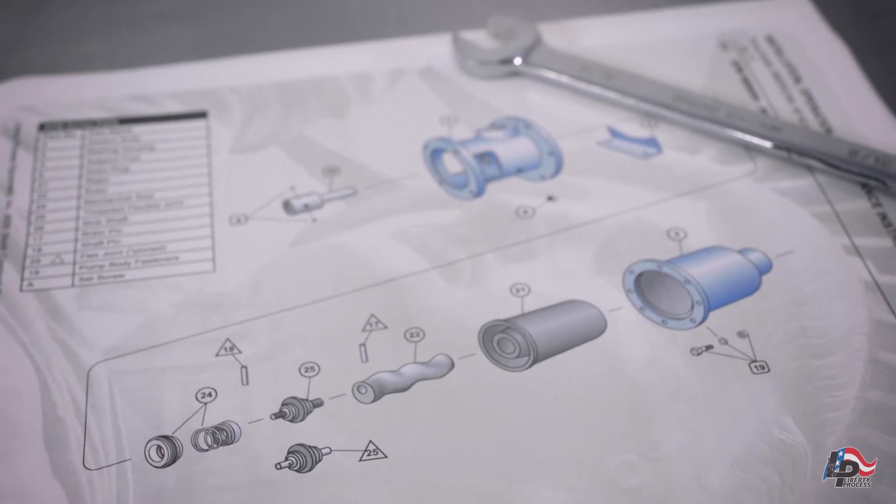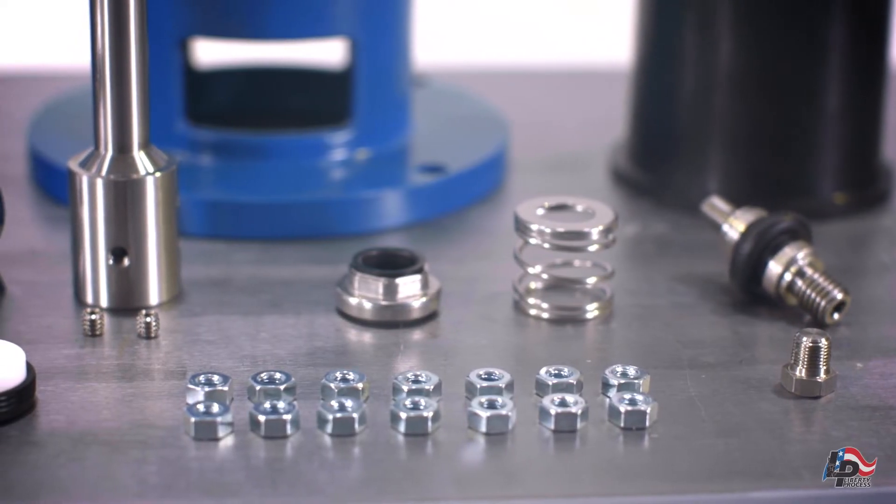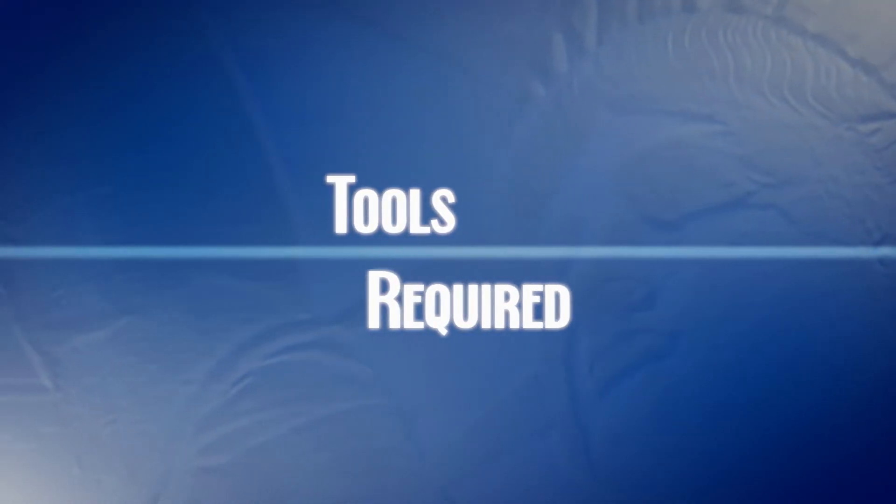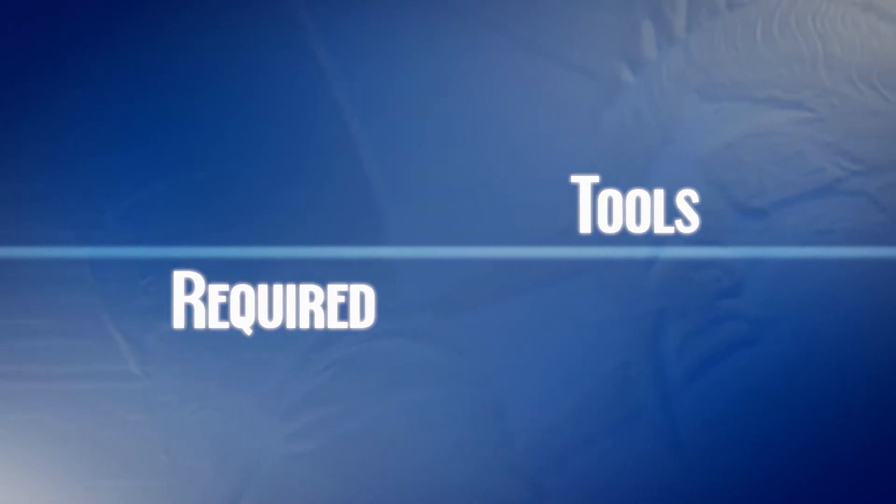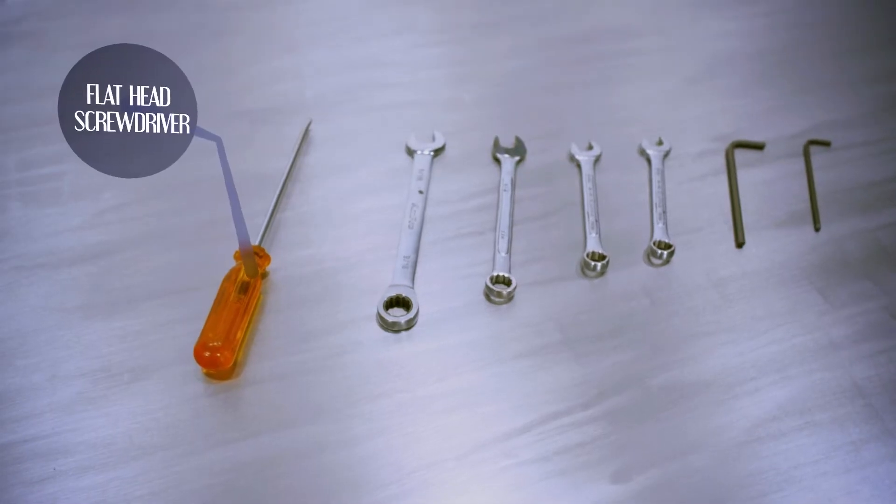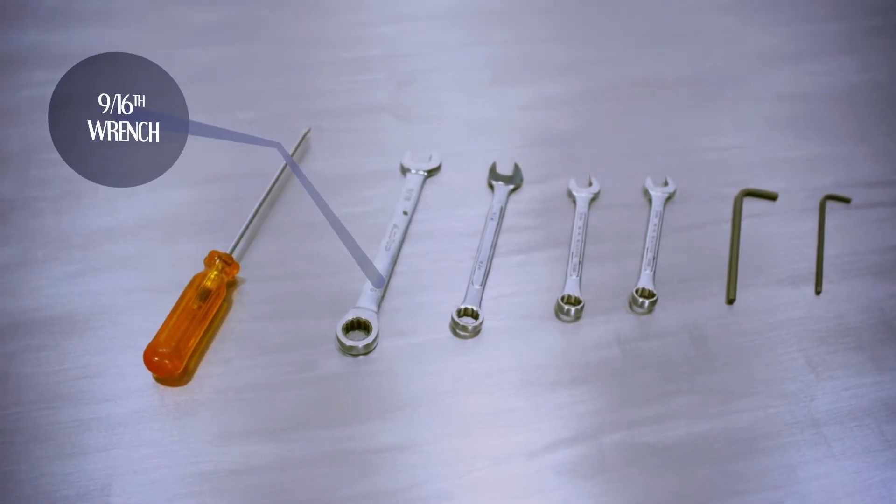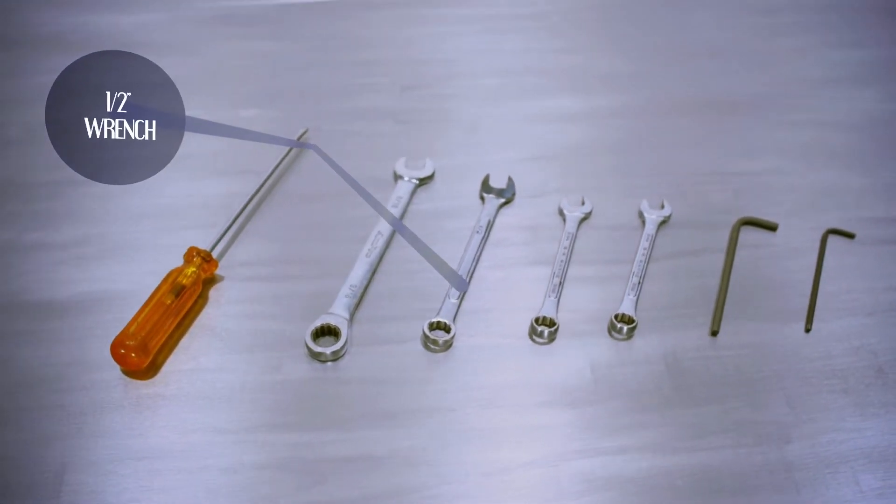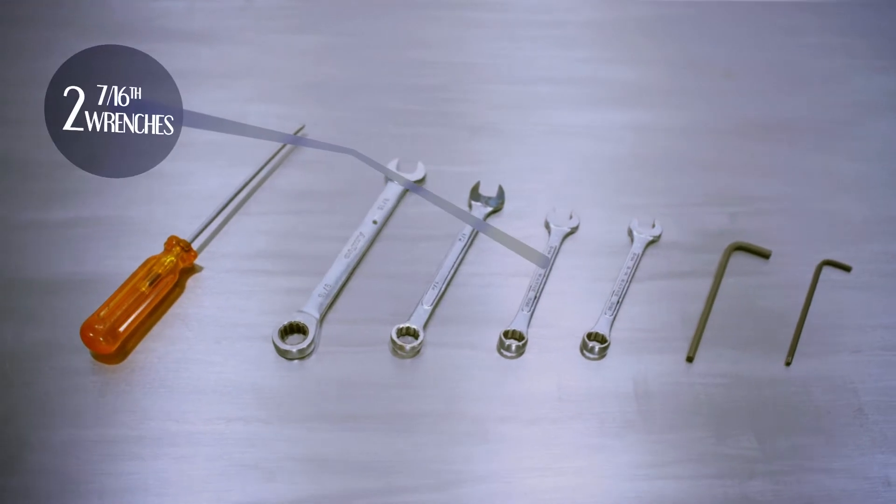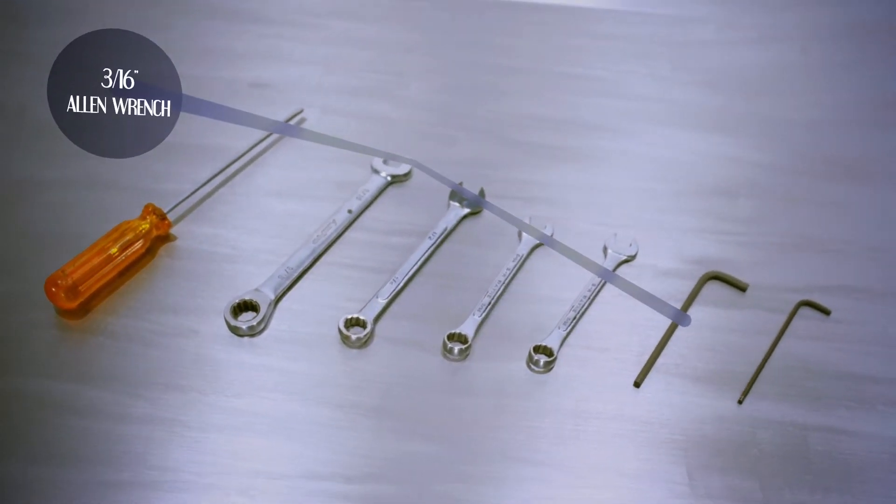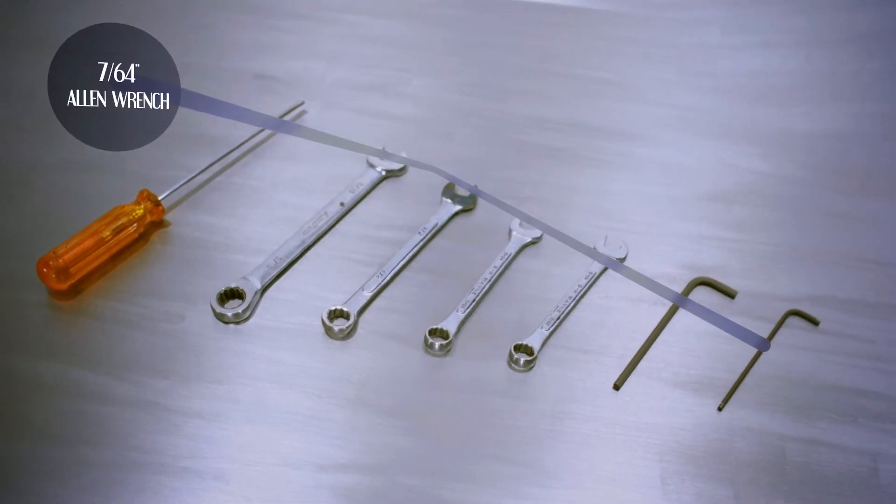Before we begin, if the pump has been used, we recommend that you have flushed and drained the pump of all pump mediums and have a clean repair service on which to work. Tools required for the APM 22 pump disassembly: a flathead screwdriver, a 9-16-inch wrench for pump motor mounting bolts, a half-inch wrench for the drain plug, two 7-16-inch wrenches for the pump casing bolts, a 3-16-inch Allen wrench for flex joint removal, and a 7-64-inch Allen wrench for stub shaft set screws.